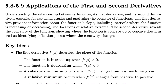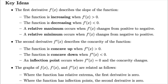Here's how to apply the first and second derivatives together. The first derivative describes the slope of the function — if positive, it's increasing; if negative, it's decreasing. A relative maximum occurs when the first derivative goes from positive to negative; a relative minimum when it goes from negative to positive. The second derivative tells us the concavity — positive means concave up, negative means concave down. An inflection point occurs when the second derivative equals zero. A critical point is when the first derivative equals zero.